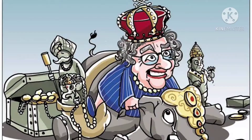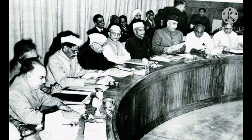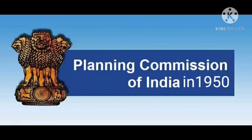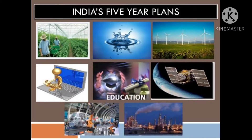5-Year Plans: 200 years of colonial exploitation had left India economically shattered. Indian leaders realized that without economic freedom, political freedom had no meaning. So systematic planning was necessary to raise the standard of living of the people. For this purpose, the government set up the Planning Commission in 1950 and adopted five-year plans beginning from 1951. The first Indian Prime Minister Jawaharlal Nehru presented the first five-year plan in 1951. The planning concentrated on developing areas such as irrigation, energy, agriculture, industry and land rehabilitation.